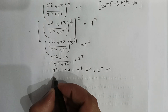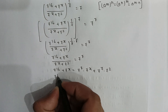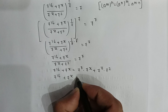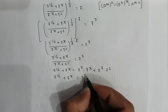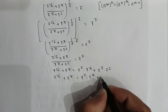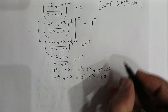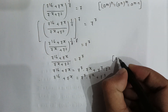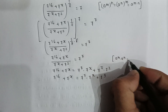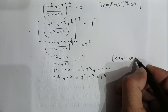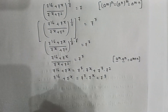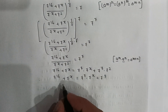So here it becomes: 7 to the power 16 plus 7 to the power x is equal to 7 to the power 7 times 7 to the power x, plus 7 to the power 9. As we know, a to the power m times a to the power n equals a to the power m plus n, since the base is the same.